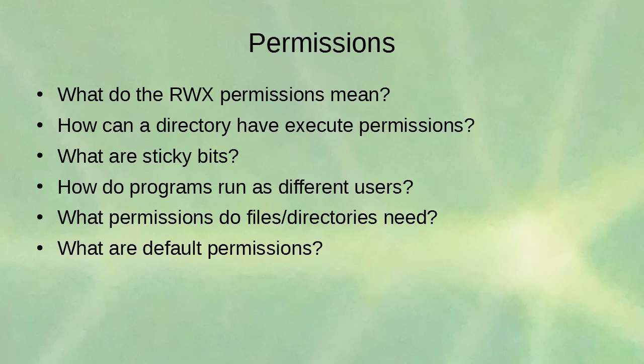The `rwx` permissions mean read, write, and execute, and they mean different things in different contexts. For a directory, `r` means you can read the contents — see which files are in it. For a file, `r` means you can read the file. `w` means you can write to it. `x` on a file means you can run it as a program. `x` on a directory means you can enter that directory — that's what execute means for a directory.